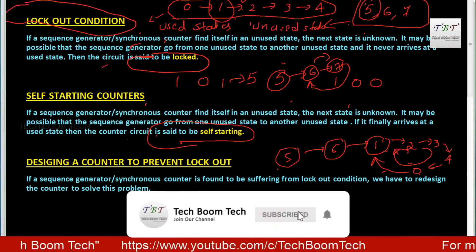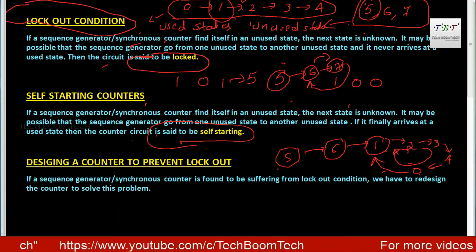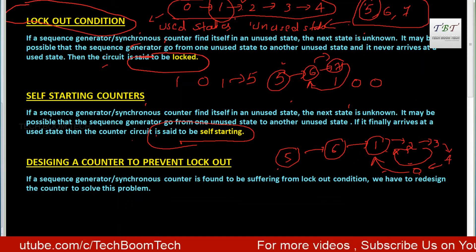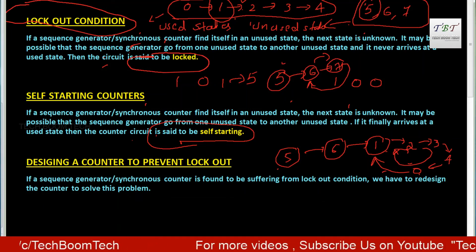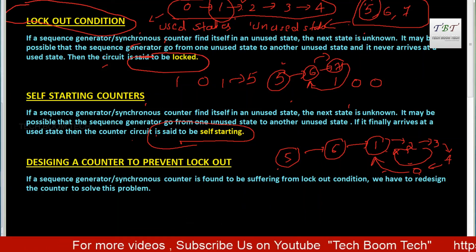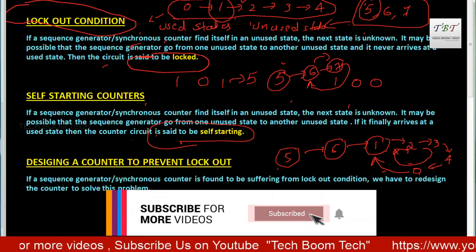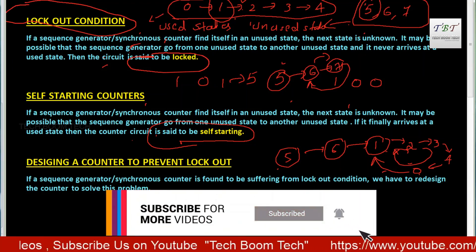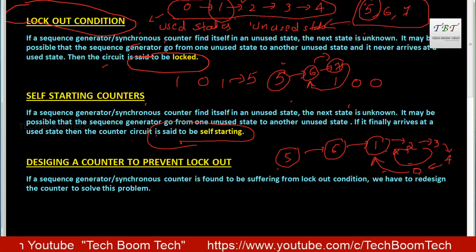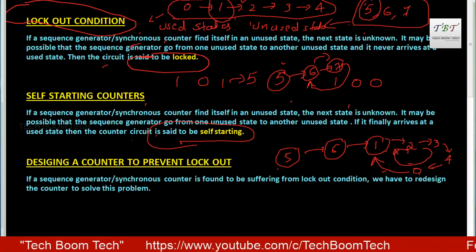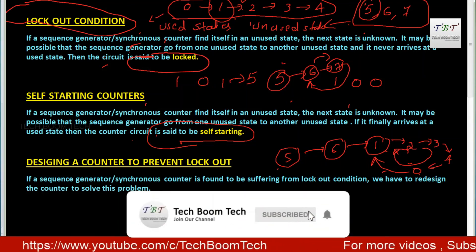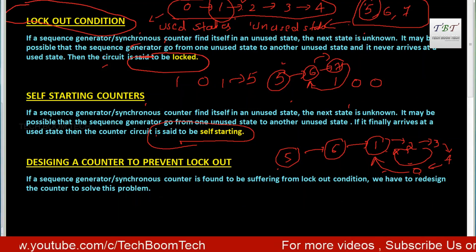Counters that get stuck in unused states are said to have a lockout condition. To fix a lockout condition, we redesign the counter so that any unused state transitions back into the main counting cycle. We check whether a lockout condition exists, and if so, we redesign the counter to handle the unused states properly.